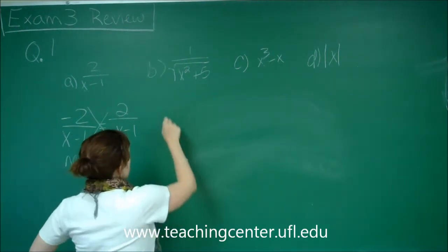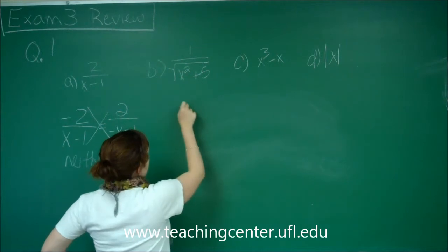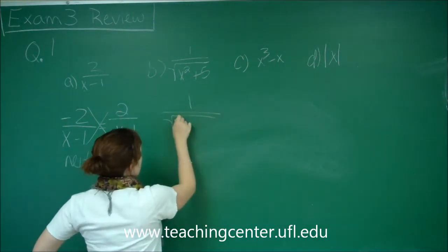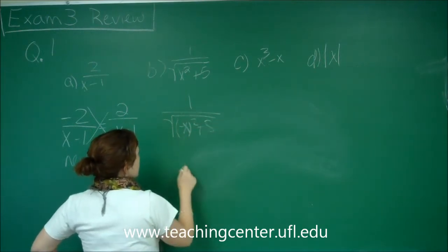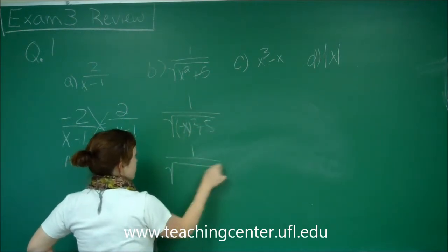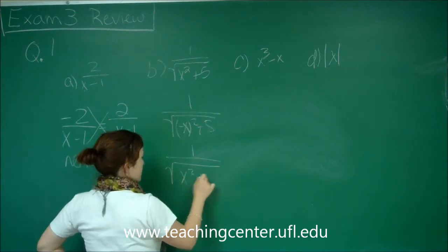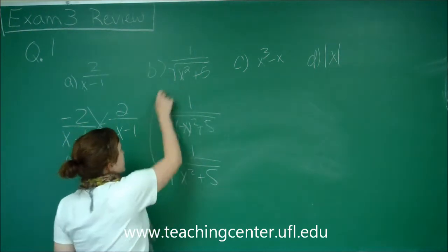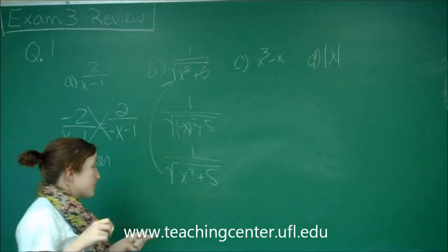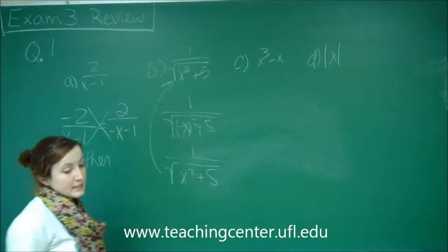For function B, when I plug in a negative x, I get 1 over the square root of negative x quantity squared plus 5. So that gives me 1 over the square root of negative x squared plus 5. And that function is the exact same function that we started with, which means that function B is even.